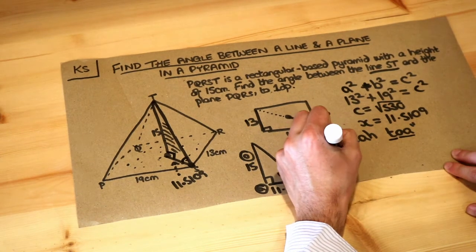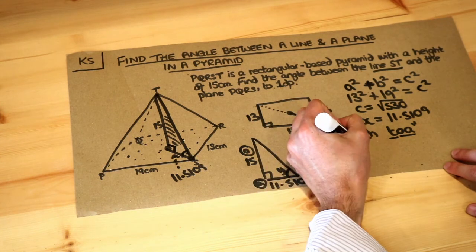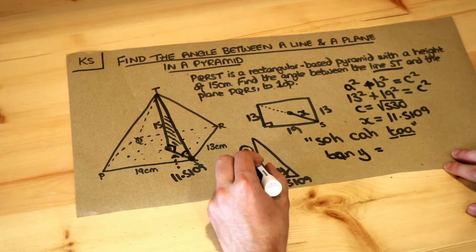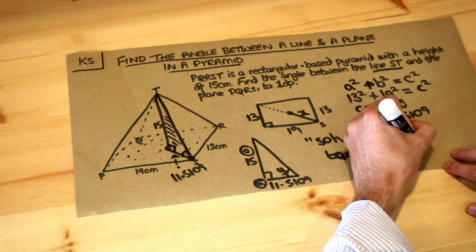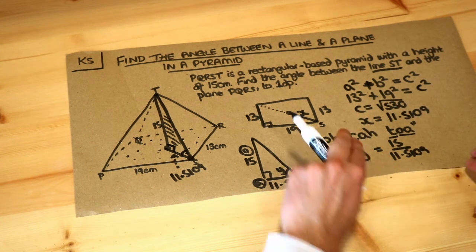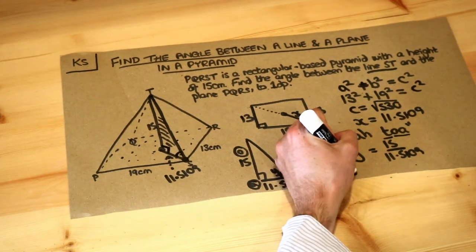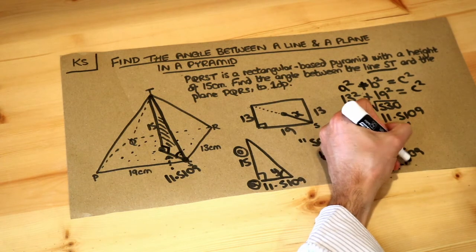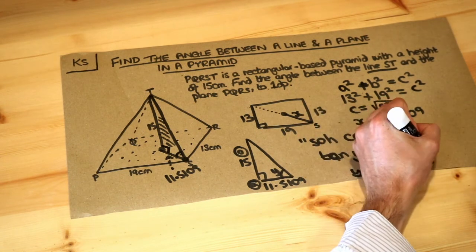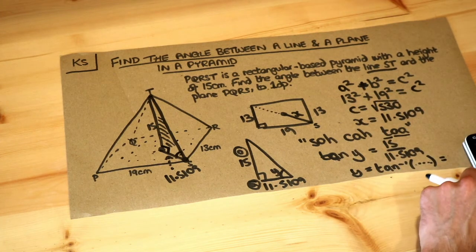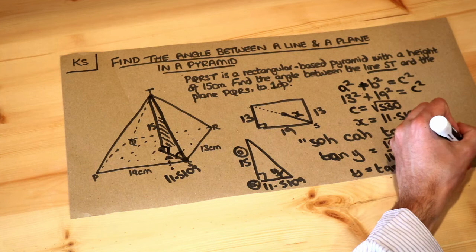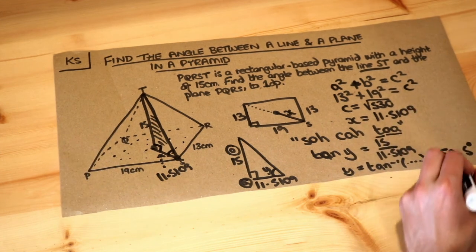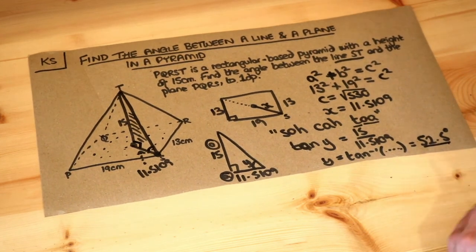So it's tan of the angle, so tan of Y, that's our angle, is equal to opposite 15 over adjacent 11.5109. And then I do inverse tan to get rid of that tan there. So I'm just going to do inverse tan of this thing here. I do inverse tan of 15 over that length there. And that gives me an angle of 52.5 degrees to one decimal place. And that is the final answer.